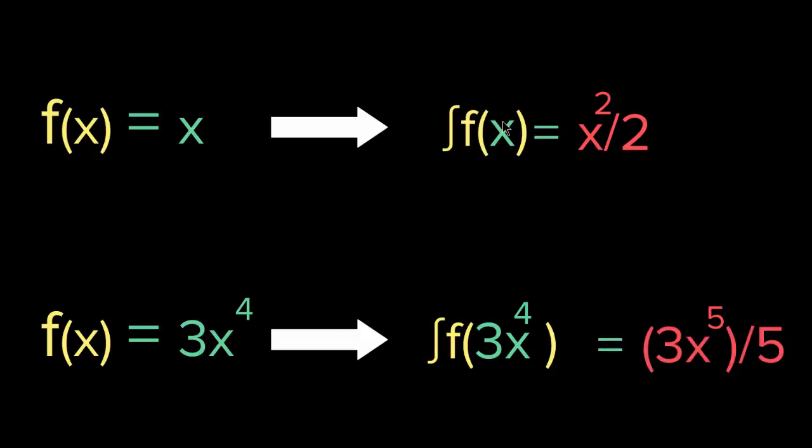That's the power rule — it's very simple. Remember the exception: when f of x equals x to the power of minus 1, the integral is the natural log of the absolute value of x plus c. And don't forget that each result should include plus c; we're just not writing it here for simplicity.